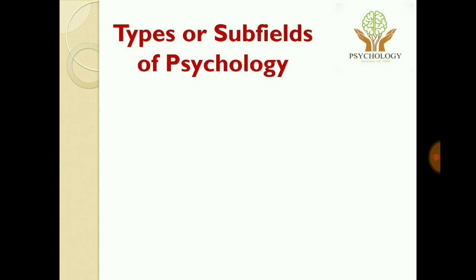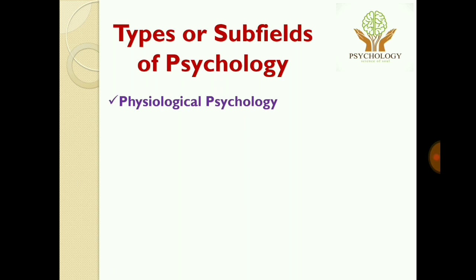The next part is the types or subfields of psychology. The field of psychology can be understood through its various subfields, as psychology has a wider scope and is used in different fields. The first subfield is physiological psychology. In physiological psychology, human beings are biological organisms, and psychological functions and the structure of our body work together to influence our behavior. Biopsychology is the branch that specializes in this area.